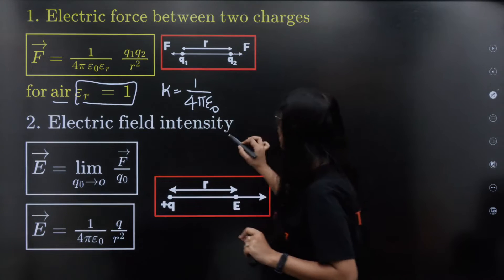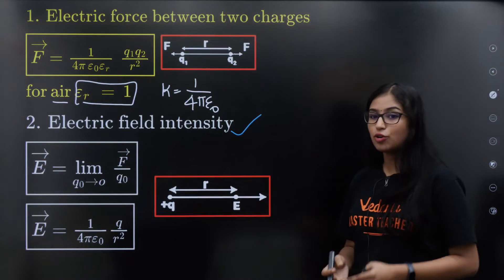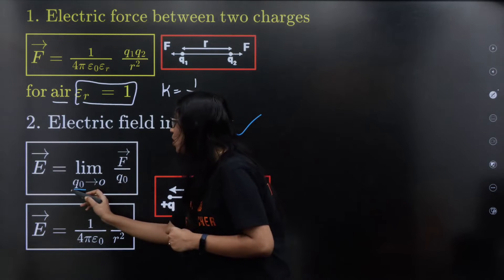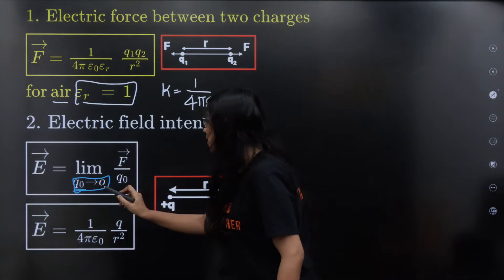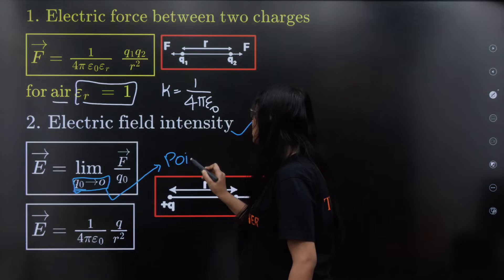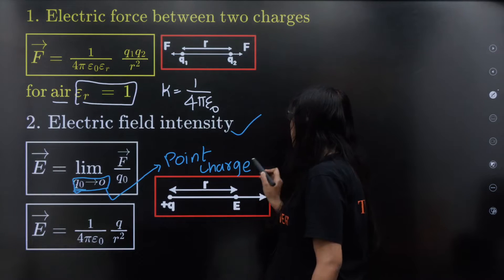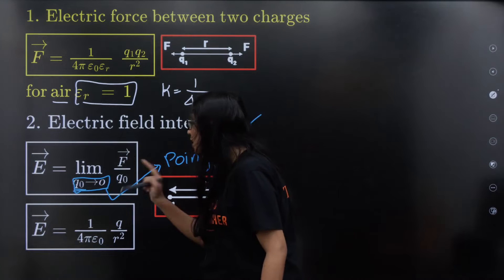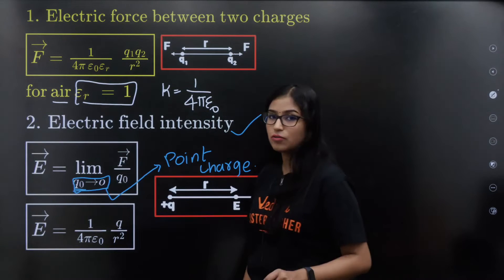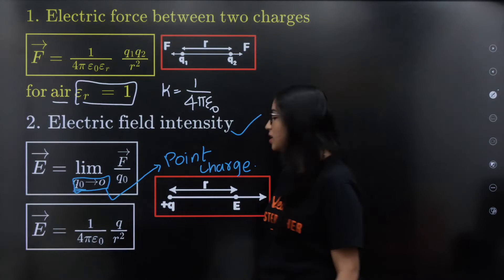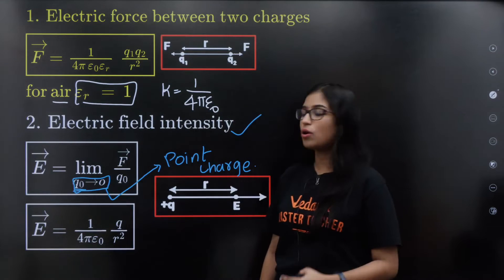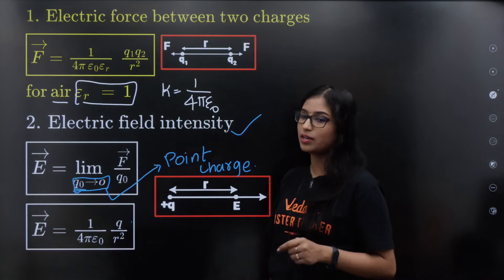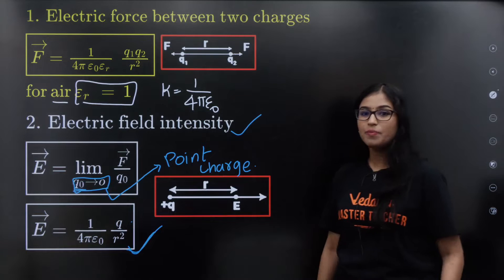Electric Field Intensity is the electric field. Electric field is defined as the limit: limit q₀ tends to 0. This q₀ tends to 0 is your point charge — we use a very low value. So E equals F divided by q₀, where F is electric force. Integrating completely, we get 1 by 4π epsilon₀ into q divided by r².